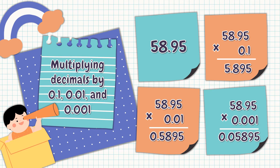Now we are done multiplying 58 and 95 hundredths by one-tenth, one-hundredth, and one-thousandth.